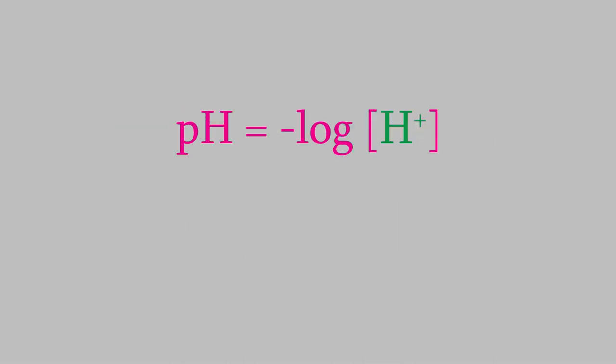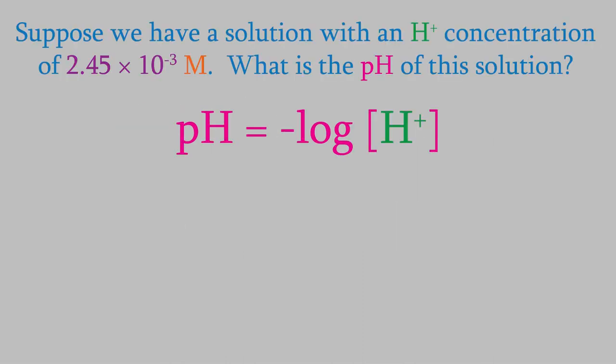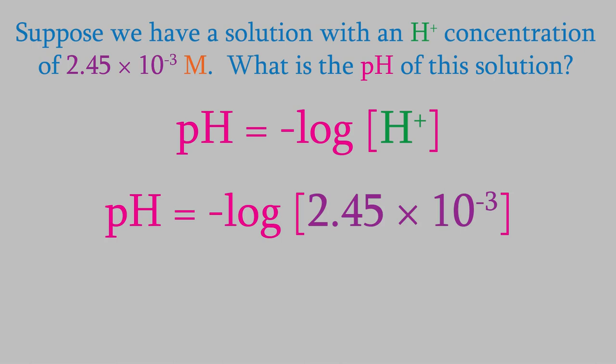Suppose we have a solution with an H-plus molarity of 2.45 times 10 to the minus 3 molar. What's the pH of this solution? In this case, we just plug the molarity into our equation, and we find out that the pH is 2.61.